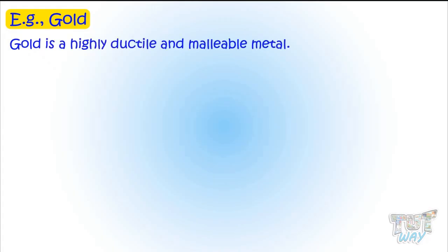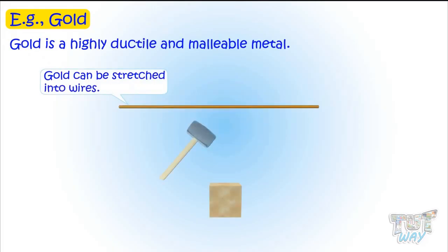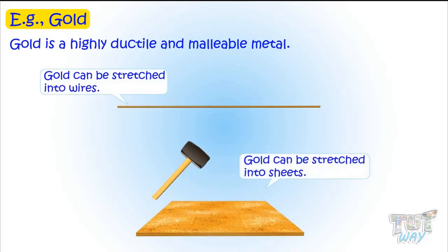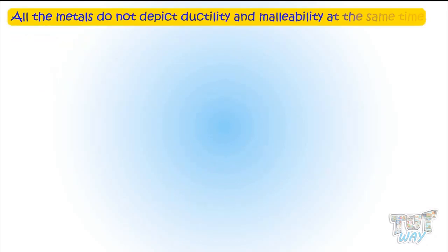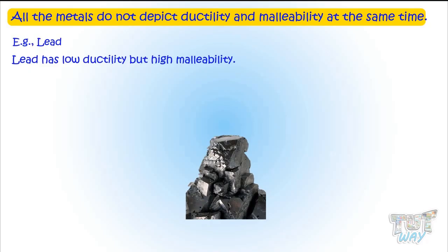For example, gold is a highly ductile and malleable metal — that is, gold can be stretched into wires and it can also be stretched into thin sheets. But not all metals depict ductility and malleability at the same time. For instance, lead has low ductility but high malleability.